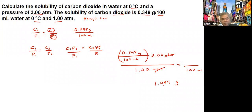So in 3 atmospheres, the amount of carbon dioxide that dissolves increases from 0.348 grams per 100 mL to 1.044 grams per 100 mL.